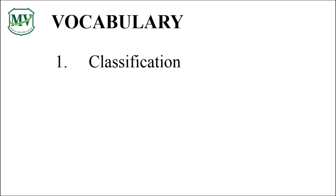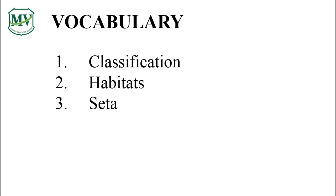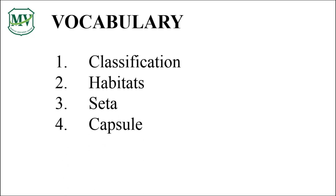Number one: classification. Number two: habitats. Number three: seta. Number four: capsule. Number five: produce.